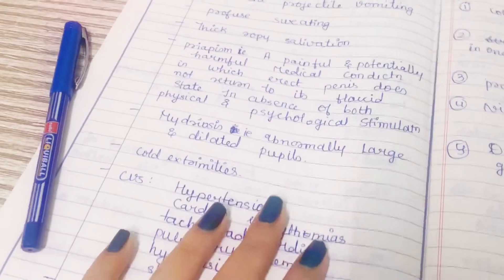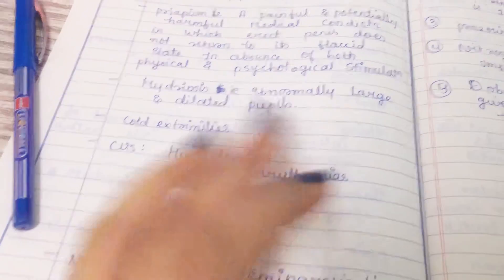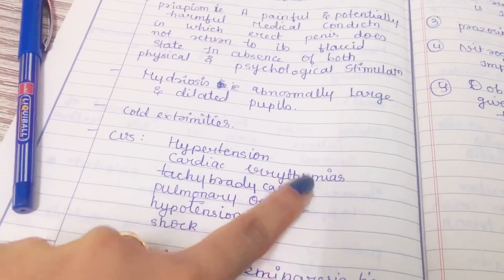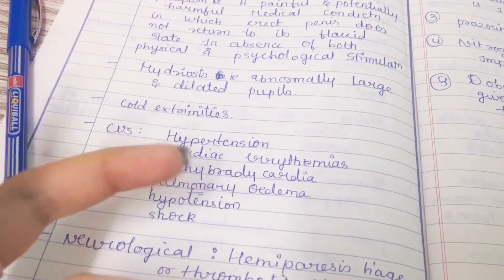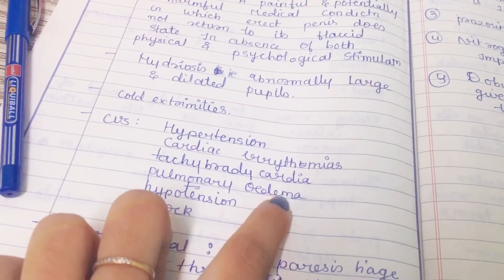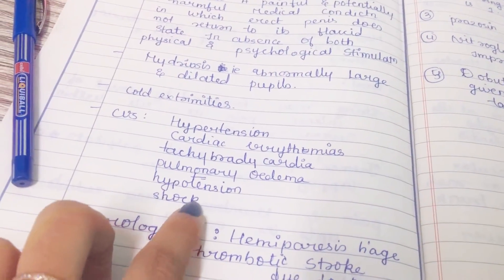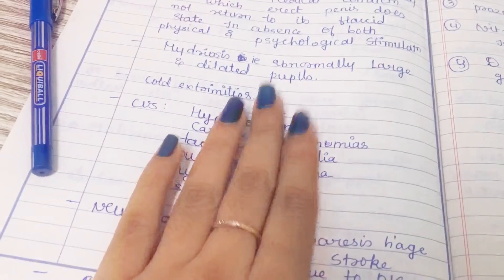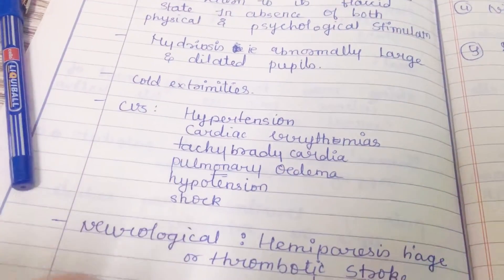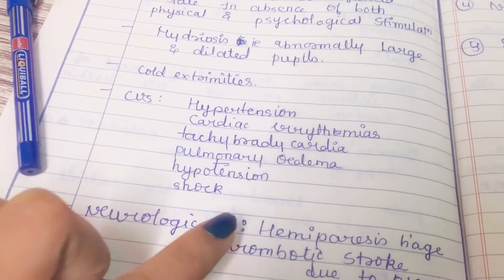What will be the heart manifestations? The heart manifestations will be hypertension, cardiac arrhythmia, tachycardia, pulmonary edema can occur, hypotension can occur, and shock. This is the cardiac manifestation.